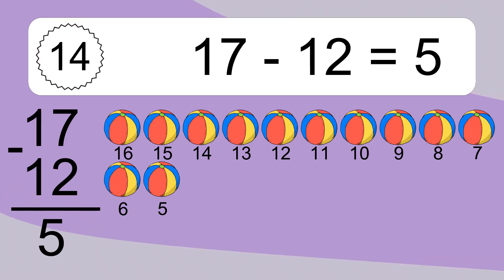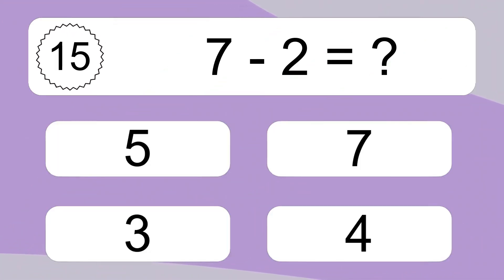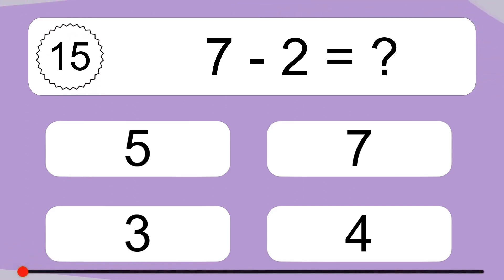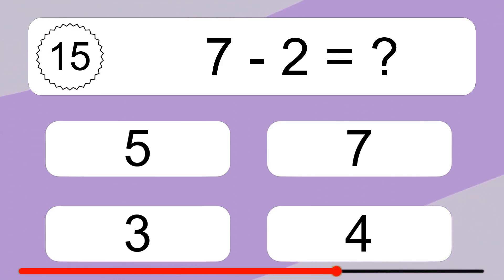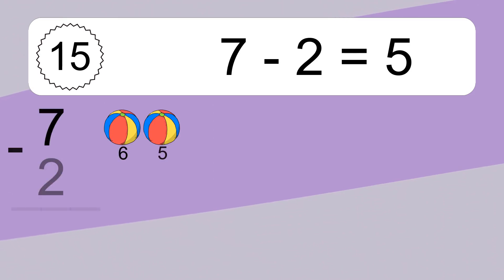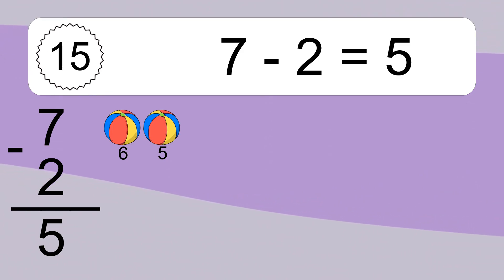7, 6, 5. 7 minus 2 equals what? 7 minus 2 equals 5. Let's count it. 6, 5.